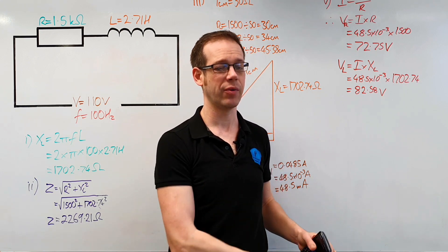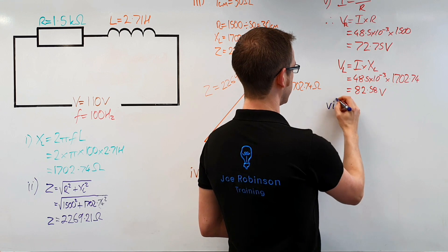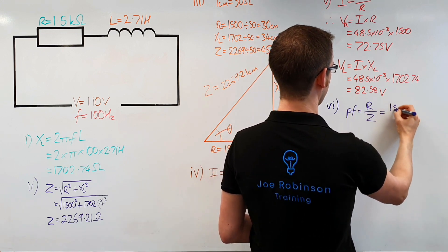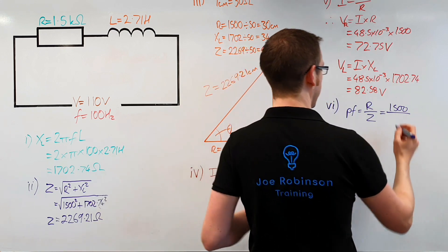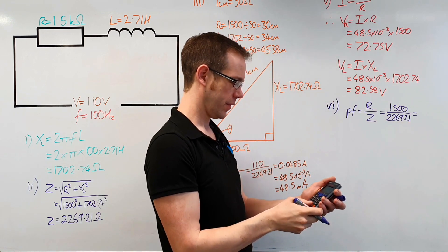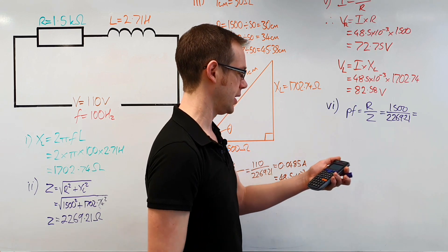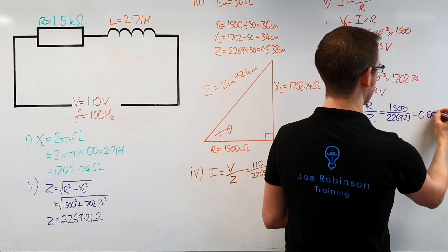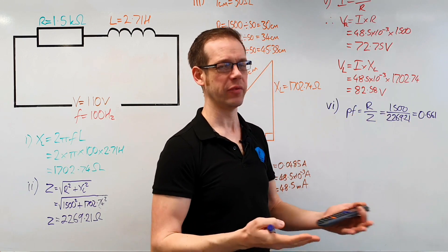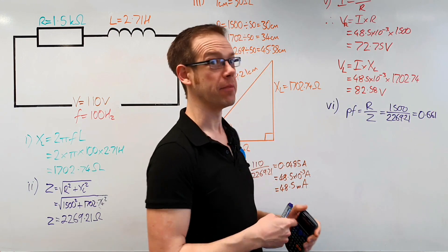Part six asks us to calculate the power factor of the circuit. Power factor is simply equal to the resistance of the circuit divided by the impedance. So we do 1,500 divided by 2,269.21, which gives a power factor of 0.661. I'm in the habit of rounding power factor to about three decimal places since three decimal points is normally a good reasonable value when working with trigonometry, and we know it's also the cosine of the phase angle.